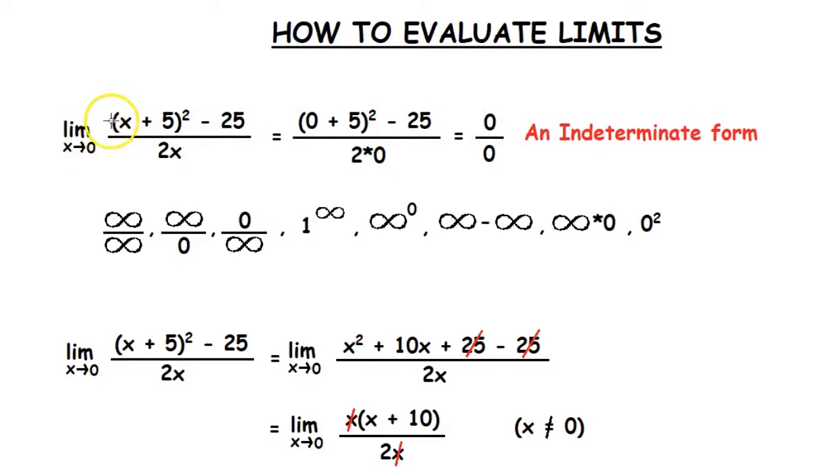Here we are asked to find the limit of (x + 5)² - 25 divided by 2x as x tends to 0. If we use the direct substitution method we get (0 + 5)² - 25 divided by 2 into 0. So this gives us the answer 0 divided by 0.